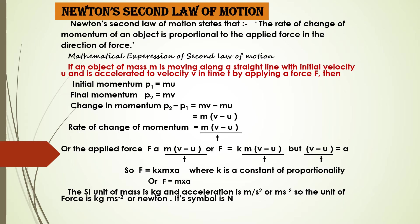The applied force F is proportional to m(v − u) / t. Removing the proportionality sign, it can be written as F = k × m × (v − u) / t. Since (v − u) / t equals acceleration a, the equation becomes F = k × m × a. The constant of proportionality k can be equated to 1, so F = m × a — that is, force equals mass into acceleration.